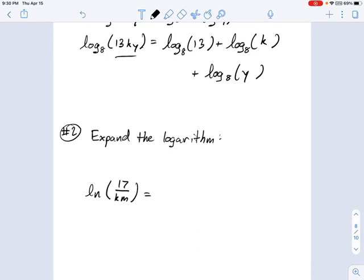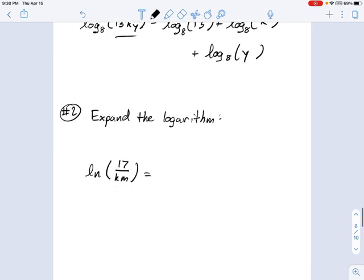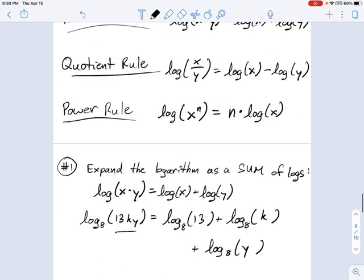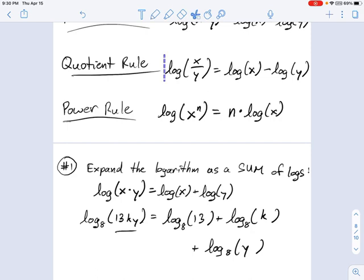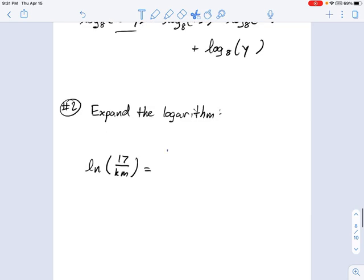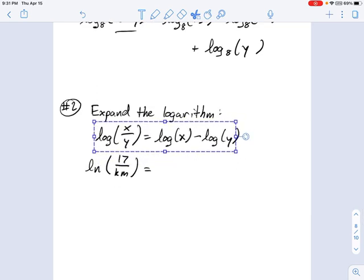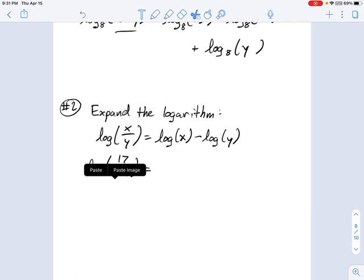Now let's try another example. It says expand the logarithm, and it shows ln, that's natural log, of 17 over km. So let's grab our quotient rule here, because this looks like I'm going to be using something involving fractions and products. There's a k and an m under there, so it looks like something times themselves and something divided by.